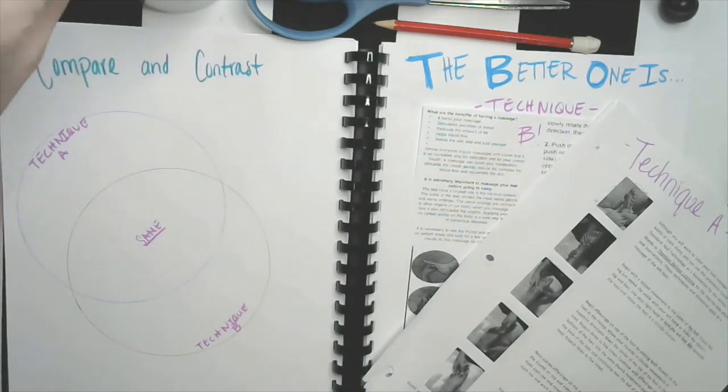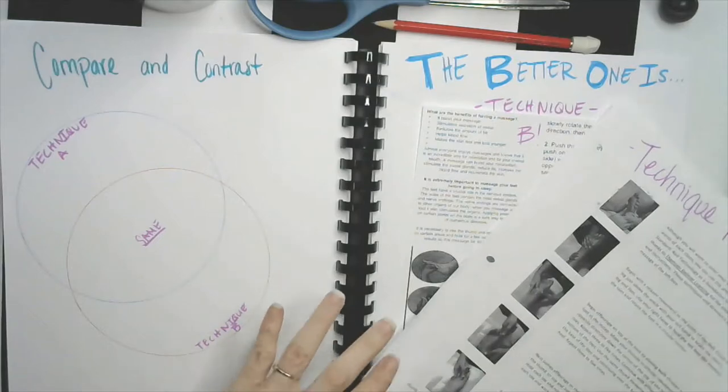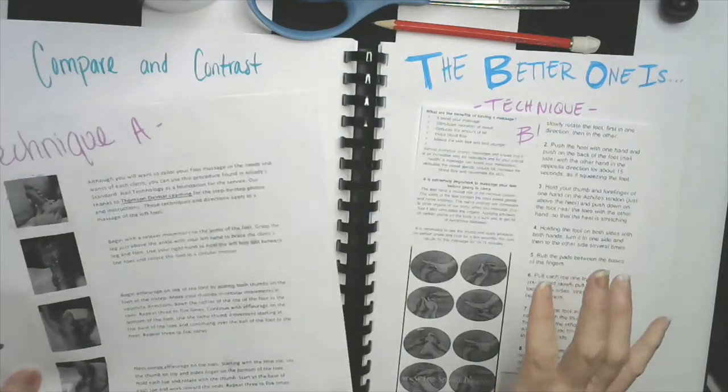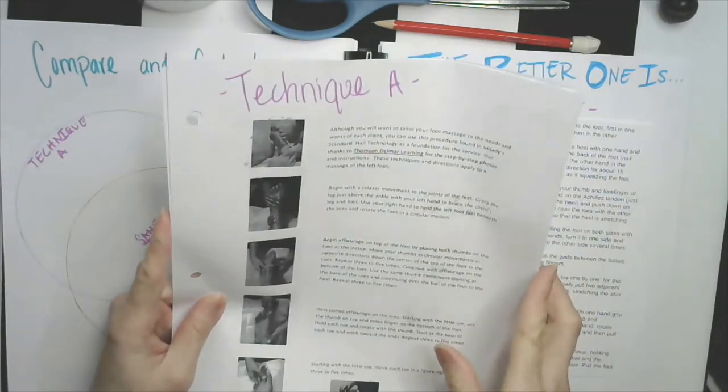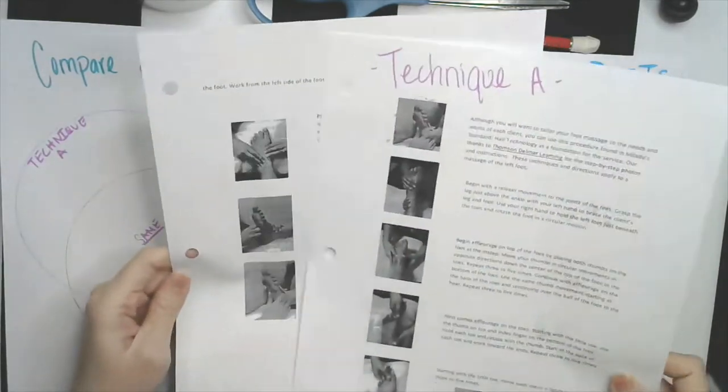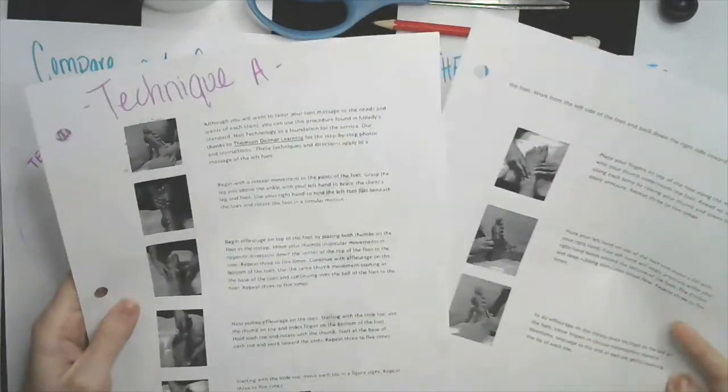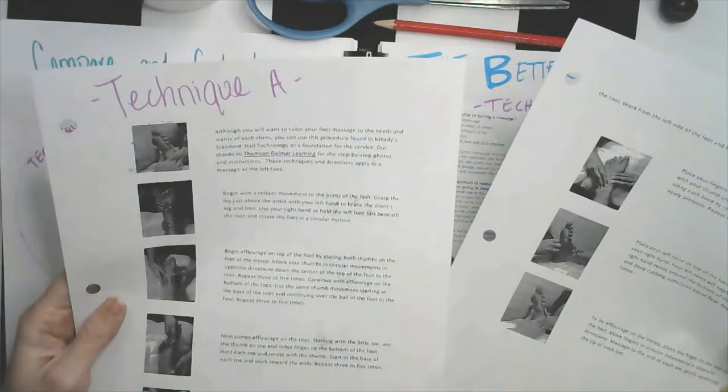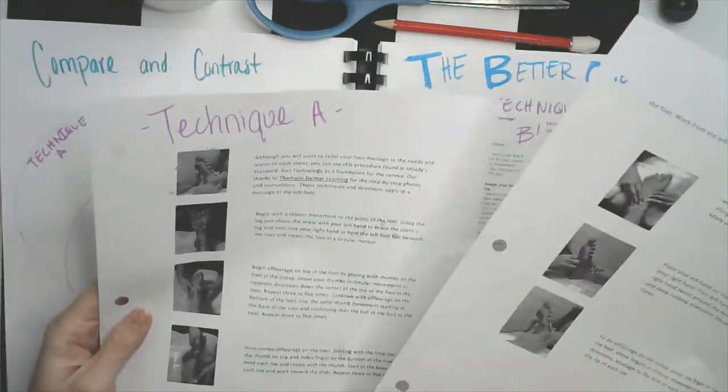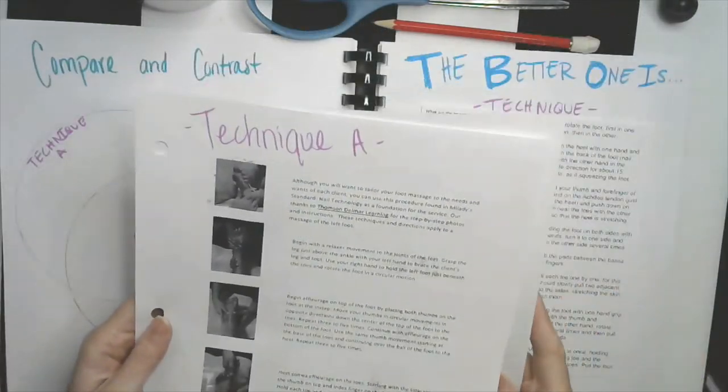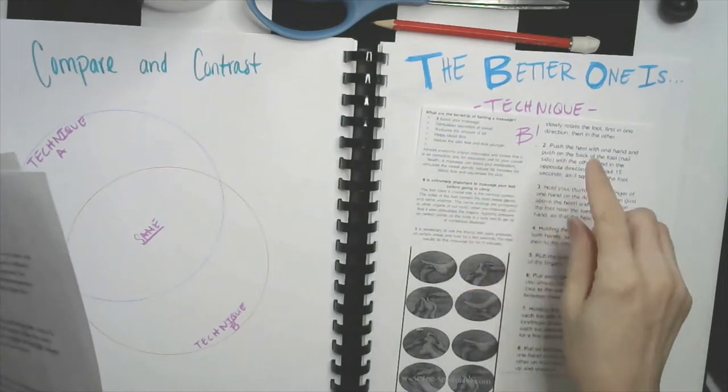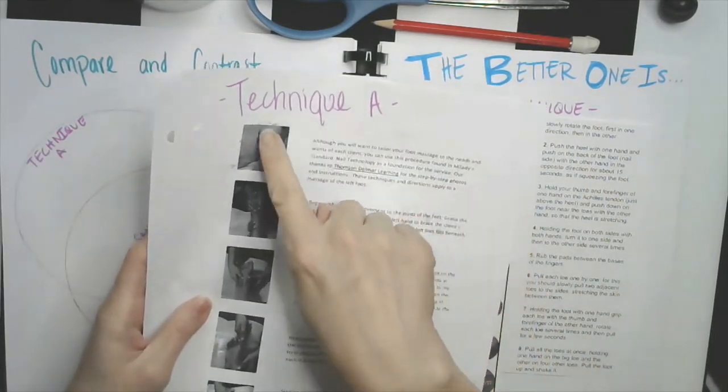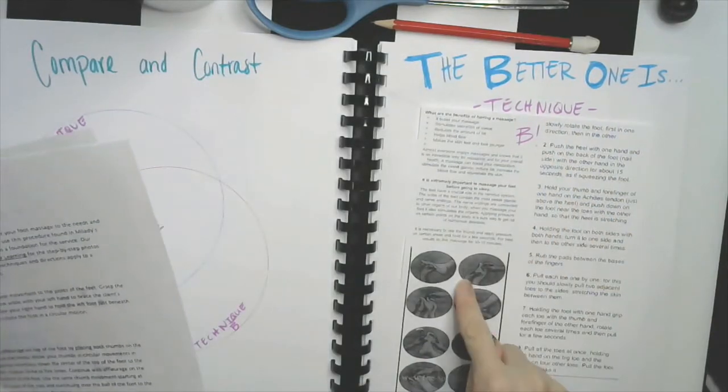Of course you need your journal, and then you're going to need these two technique pages. Technique A is the foot massage manipulations that has two pages - it was front and back so I split it into two. Technique B is the one with the circles on it. So technique A has the squares, technique B has the circles.